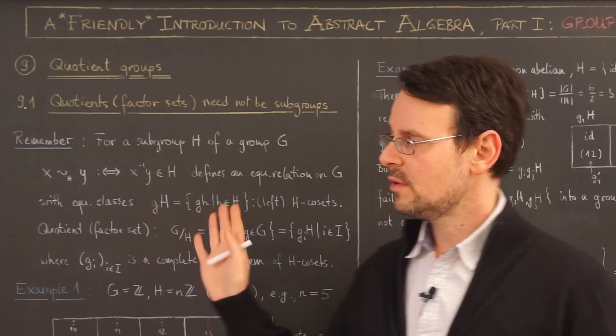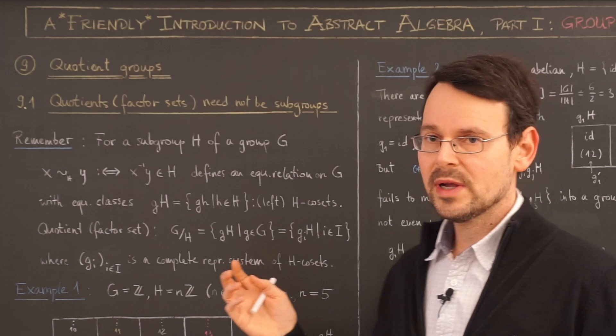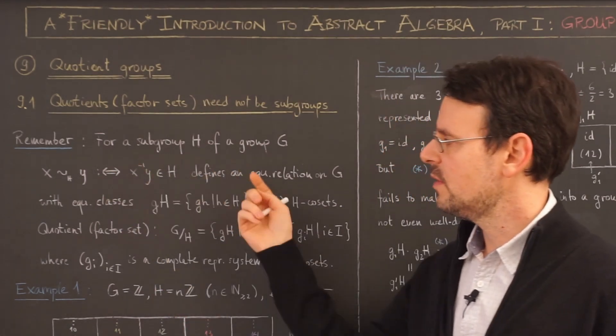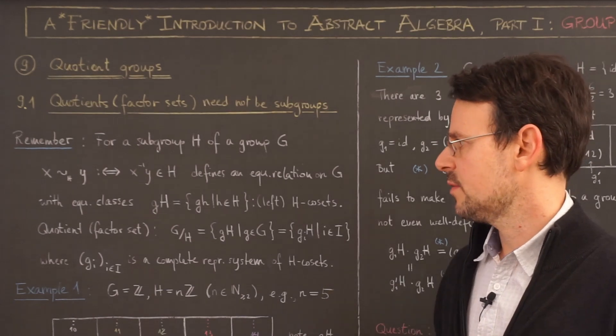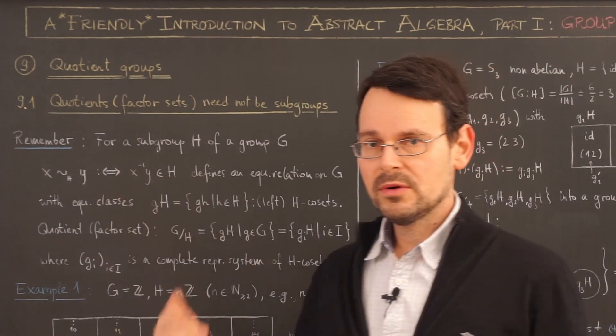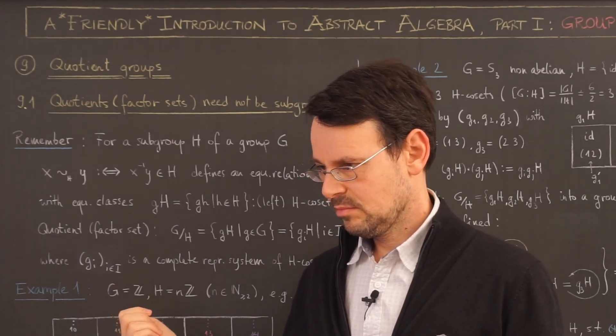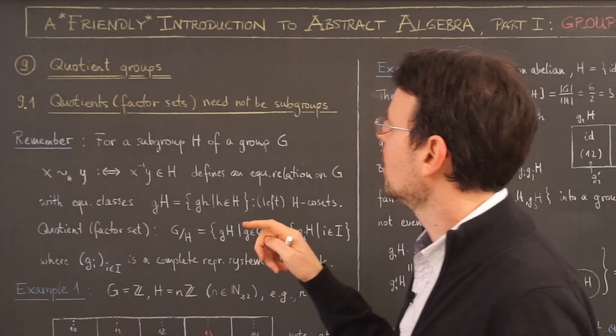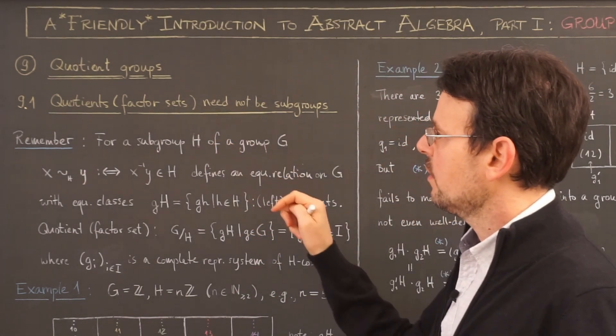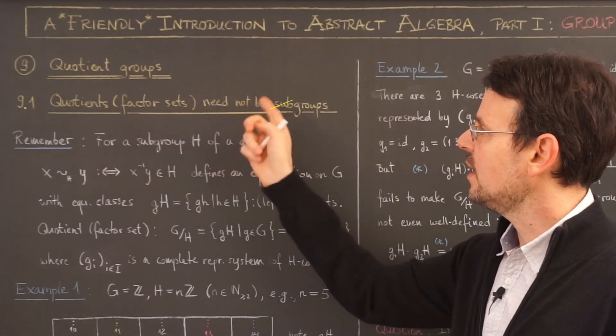So as a prerequisite for the next lessons you absolutely need to have a firm grasp of the concept of equivalence relation, partition of a set, and the factor set. So please refer to lesson 6, I think. Okay, we start with the following observation, namely that factor sets need not be groups.